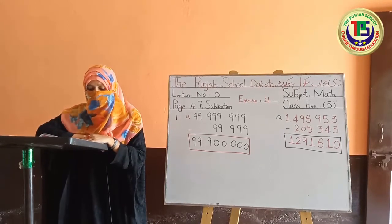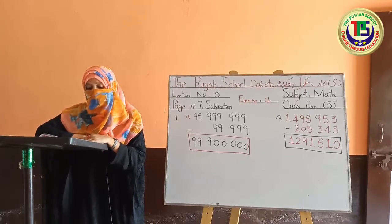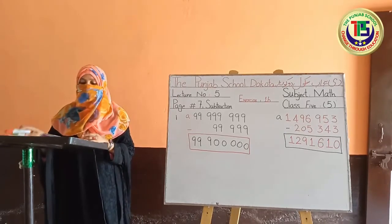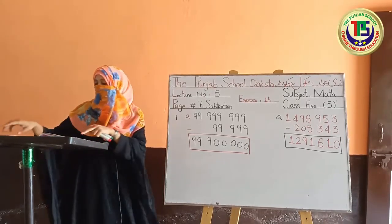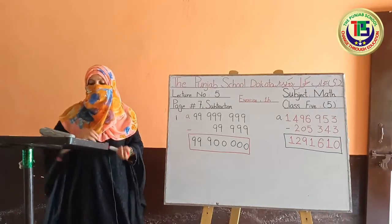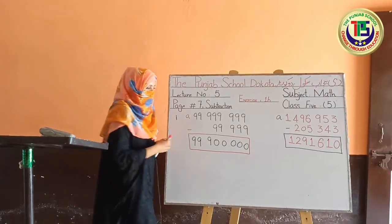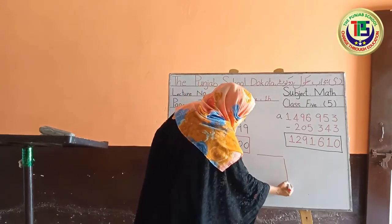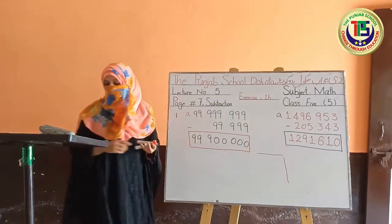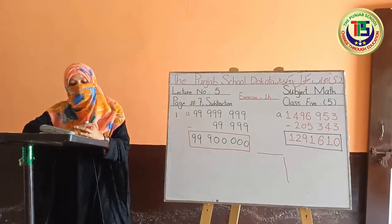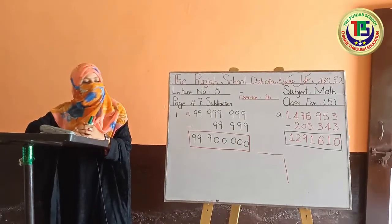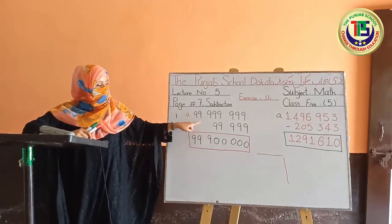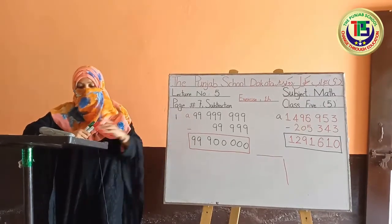Come to the next part — question number 9: 'Write in vertical form and subtract.' We know horizontal and vertical form. Horizontal form is written across like this, and vertical form goes downward. The question is given in horizontal form in the book — we have to write it in vertical form: first amount on top, second amount below, and then subtract.